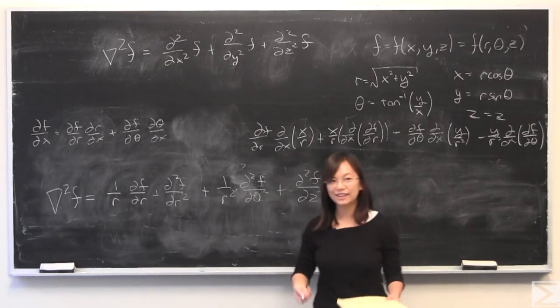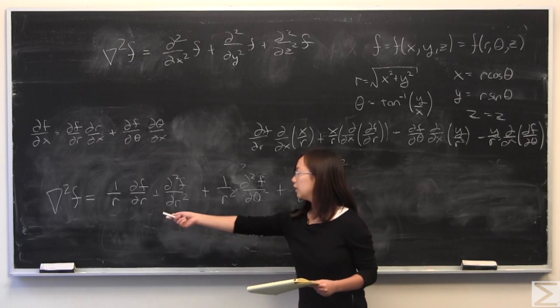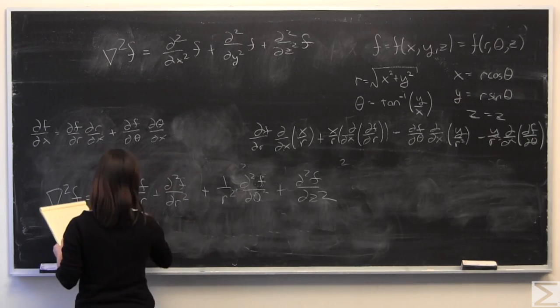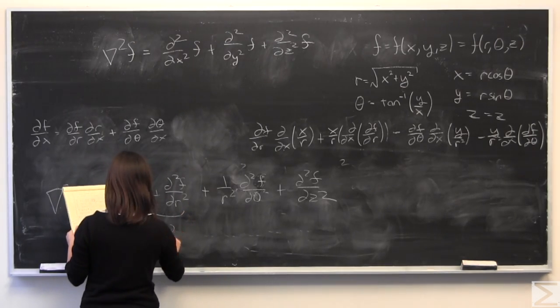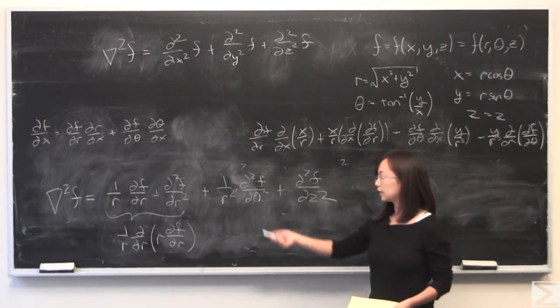After doing all that work, which we have done in the solution transcript if you would like to see all of it done out completely, you'll get this. This is the Laplacian in cylindrical coordinates. Oftentimes you will see this written differently, and it is the same thing. It's just that if you do it out, it looks like that.